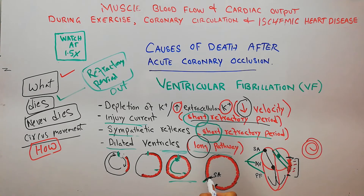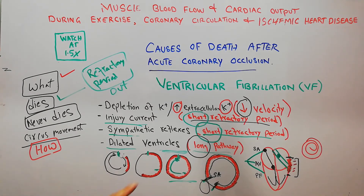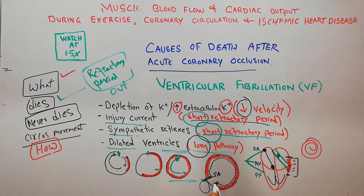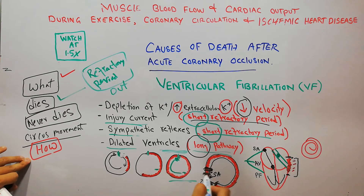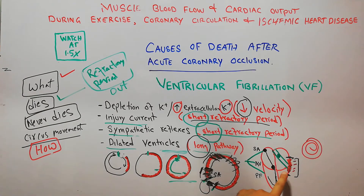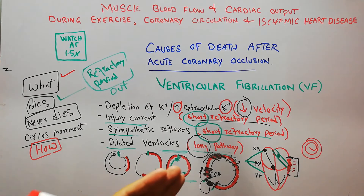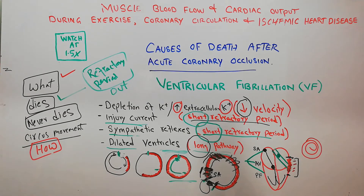Due to the long pathway, by the time the impulse ends, the area where it started has come out of the refractory period and can be activated once again. Then by the time that area is activated, the next area is out of its refractory period, and so on — the movement goes on and on. The impulse moves round and round in circus movement, leading to ventricular fibrillation, where small portions of the heart contract without coordination and there is no proper pumping or cardiac output.